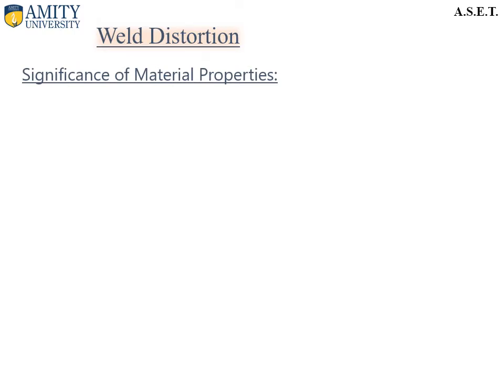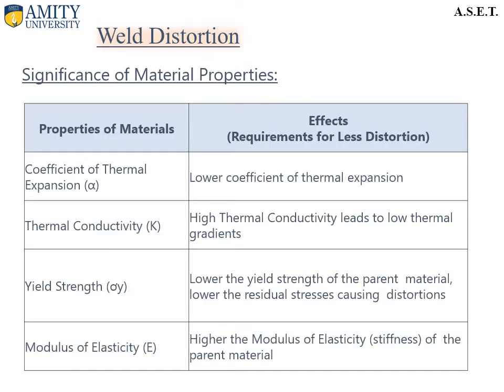Let us understand the significance of material properties in the context of weld distortion. Regarding the coefficient of thermal expansion alpha, a lower coefficient of thermal expansion is required for less distortion. High thermal conductivity leads to low thermal gradients. Lower yield strength of the parent material results in lower residual stresses causing distortions. Higher modulus of elasticity increases stiffness of the parent material, so distortions will be lower.